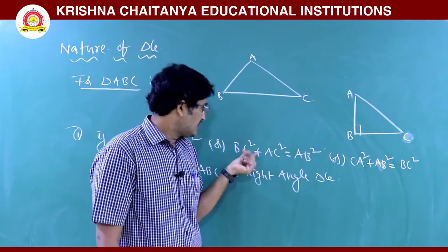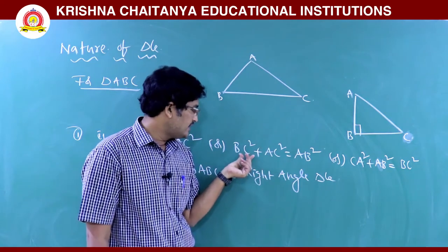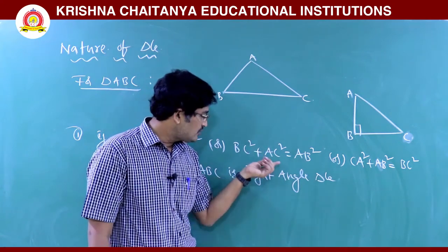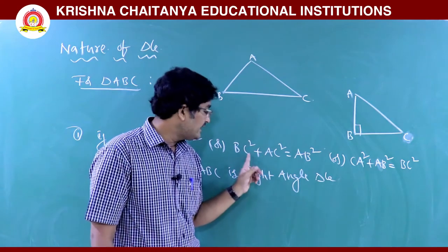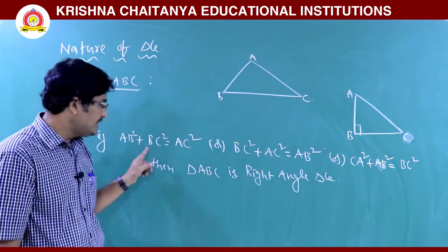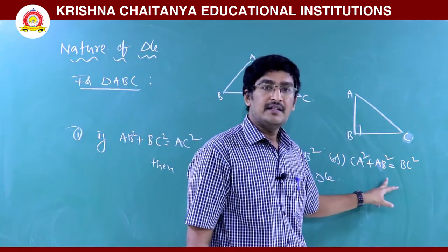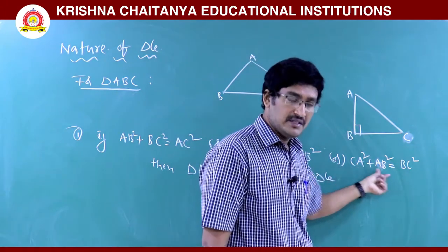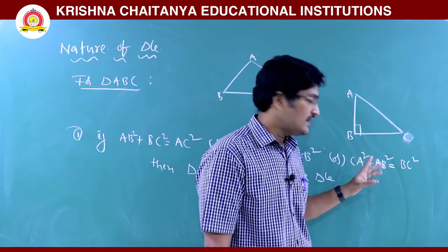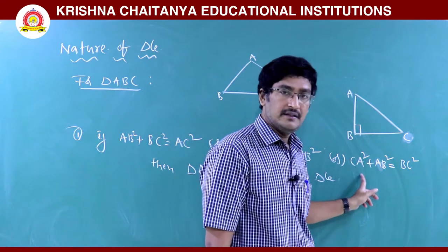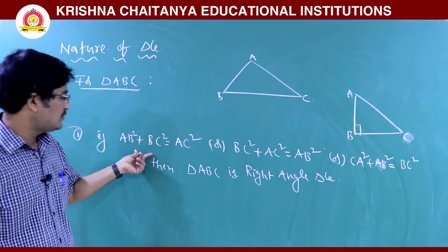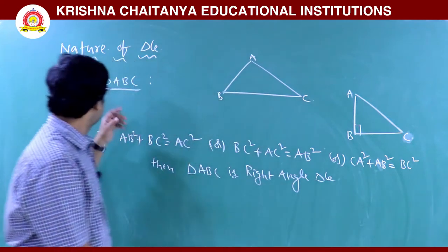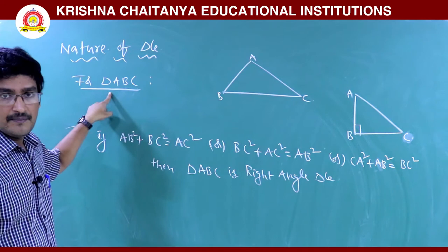If the triangle ABC follows the condition CA² + AB² = BC², the common vertex is A, so the right angle is at A. To summarize: if AB² + BC² = AC², or BC² + AC² = AB², or CA² + AB² = BC², then triangle ABC is a right angle triangle.